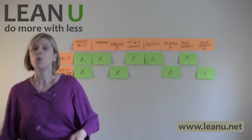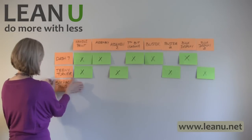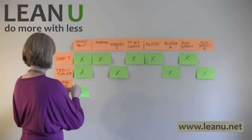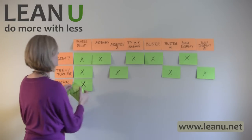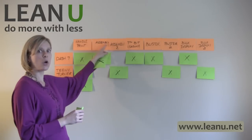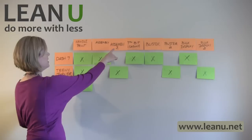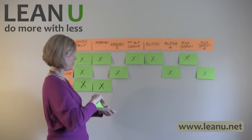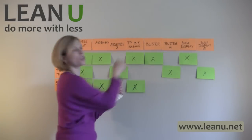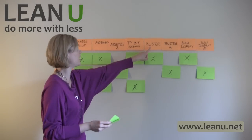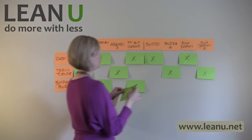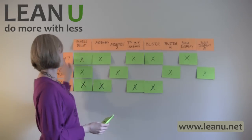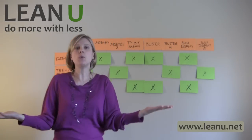And lastly, we look at our Six Pack Plus screwdriver. Does it go through handle print? Yes. Assembly? Yes — the same assembly as the Dash 7, so we put the X under that process. Does it go through seventh bit loading? Yes. Blister packaging? Yes — the same work area as the Dash 7. Bulk display? Yes, the same bulk display area as the Dash 7. And that's how you do a product family matrix for all of your products.